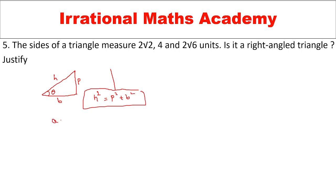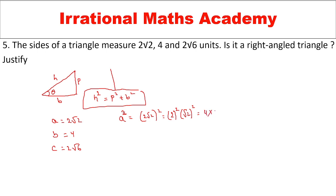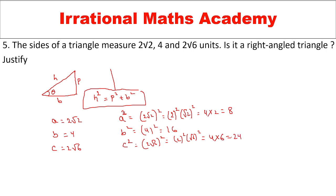Let a = 2√2, b = 4, and c = 2√6. Let me square each side. a² = (2√2)² = 4 × 2 = 8. b² = 4² = 16. c² = (2√6)² = 4 × 6 = 24. Now checking: does c² = a² + b²? We get 24 = 8 + 16 = 24. Yes, c² = a² + b² is satisfied.